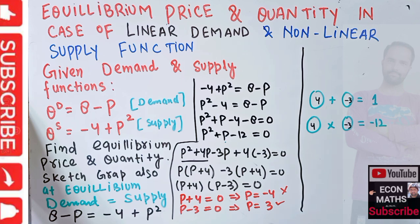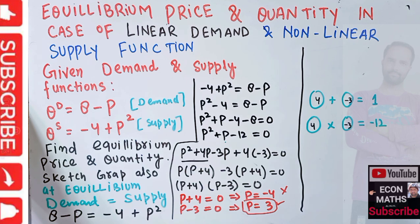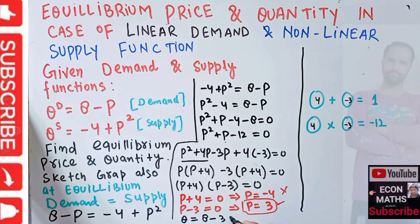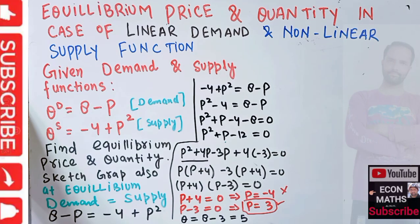To find the equilibrium quantity corresponding to the price of 3, we simply plug P = 3 into the demand function. So Q = 8 - 3 = 5. The equilibrium quantity is 5.